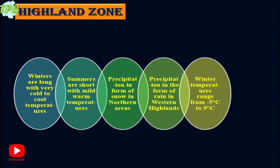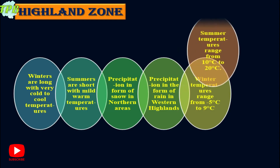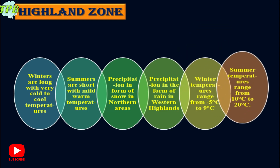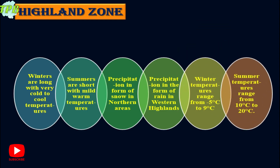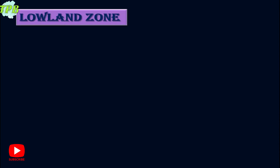The winter temperatures in the highland zone range from minus 5 degrees Celsius to 9 degrees Celsius, and the summer temperatures range from 10 degrees Celsius to 20 degrees Celsius.